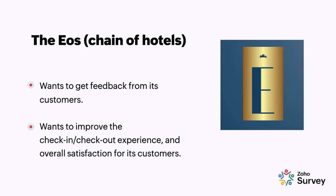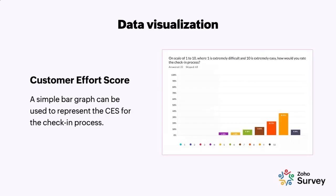We'll first look at the Customer Effort Score. Let's say the EOS wants to see how easy or difficult it is for customers to check in. This type of data can be represented using a simple bar graph. Looking at this data, about 36.36% of people have given them a score of nine.